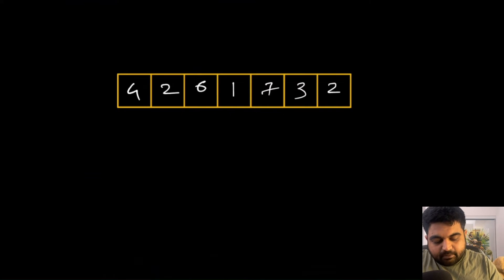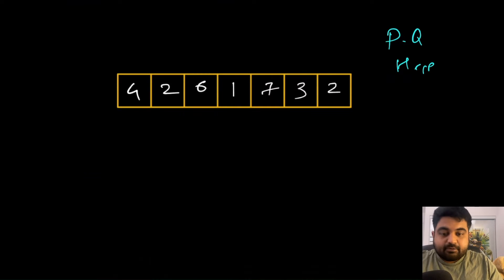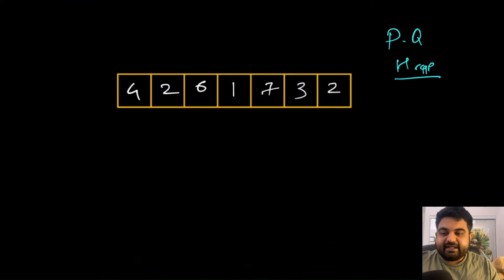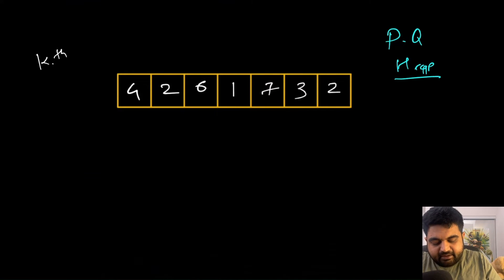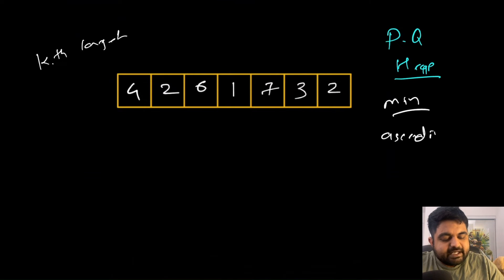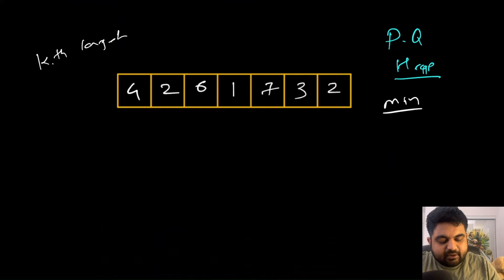Without sorting, we have two options. The first is the most optimal way using a priority queue or heap, and the second is using a quick select algorithm — let me know in the comments if you want to see that approach. In this video we are going to use a heap. The idea is to maintain a min heap where we store values in ascending order, with a size limited to k.